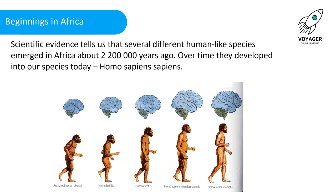Over time they developed into our species today called Homo sapiens sapiens. Technically the scientific name is Homo sapiens sapiens because Neanderthalensis, their technical name was Homo sapiens neanderthalensis. Both are part of the Homo sapiens species but with slight differences, hence the names Neanderthalensis and sapiens. Homo sapiens are modern humans, the humans that are on Earth today.